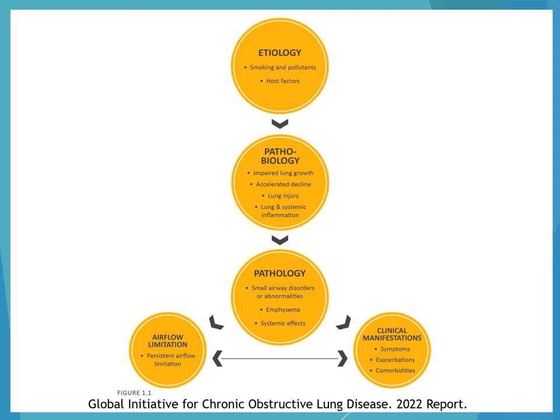This flow chart from the GOLD guidelines covers the etiology of COPD, starting with risk factors such as smoking. Most patients with COPD will have had some exposure — being a current or former smoker, or exposure to pollutants or other host factors. This leads to impaired lung growth, accelerated decline in lung function, lung injury, and/or lung and systemic inflammation, and then to physiological changes including airflow limitation, emphysema, and clinical manifestations — symptoms, increased exacerbations, and other comorbidities.